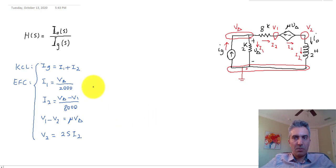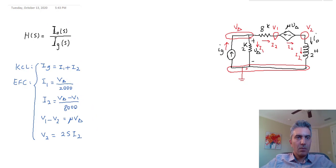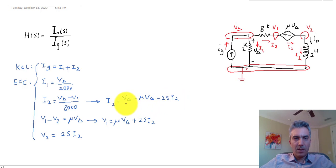So let's just keep going with this. From this equation, V1 is equal to mu V_delta plus V2. And I'm going to use this equation 2s I2, and I take V1 and put it in this equation. So I2 would be equal to V_delta minus mu V_delta minus 2s I2 divided by 8000. So from this I can actually calculate V_delta as a function of I2. So that would be V_delta times (1 minus mu) equals I2 times 8000 plus 2s times I2.